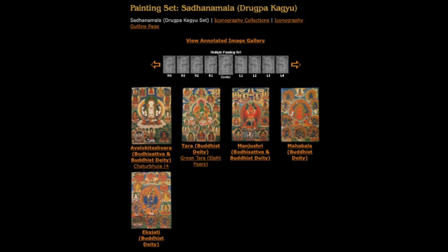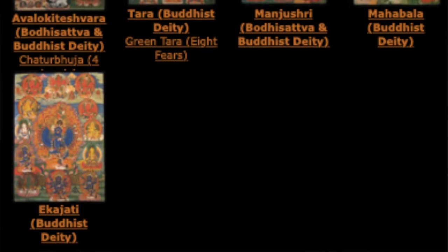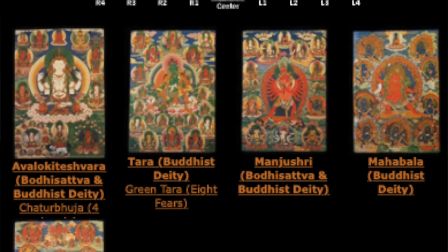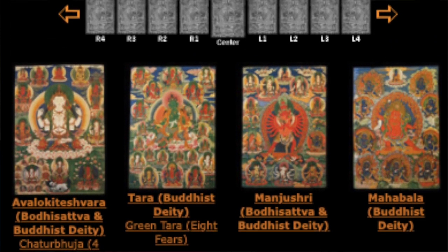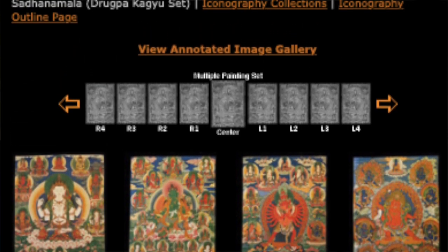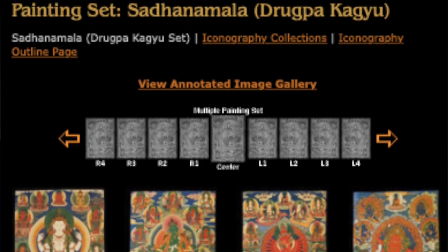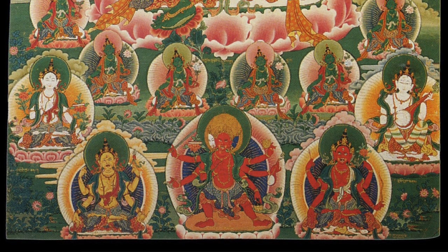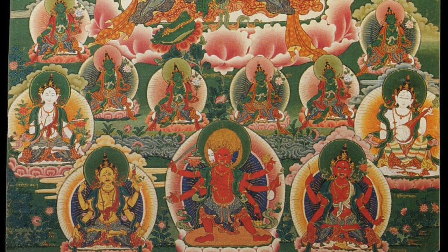One interesting set comes from Bhutan, formerly from the Euchre collection out of Switzerland — before that, Bhutanese. The style of the painting is Bhutanese. I'm dating it to really the 19th century, but it's possible it's early 19th century or late 18th century. The set of paintings depicts approximately 142 to 143 iconographic forms, so deity figures.